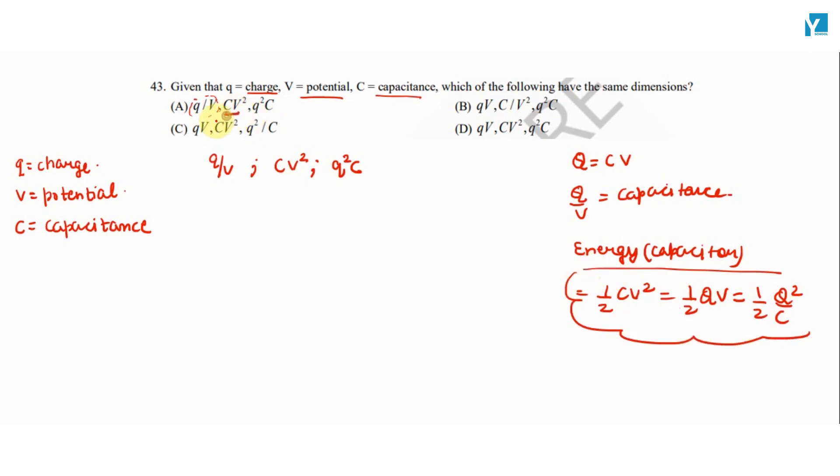Agar hum dekhe CV square hi hai, to energy ki dimension ho hai, lekin capacitance ki dimension nahi. So option A toh incorrect hai. Similar option A toh incorrect hai.